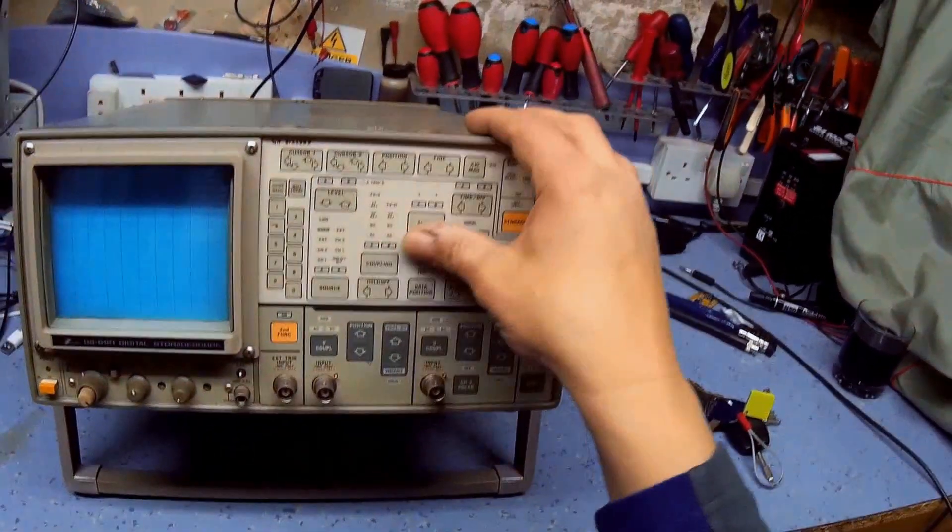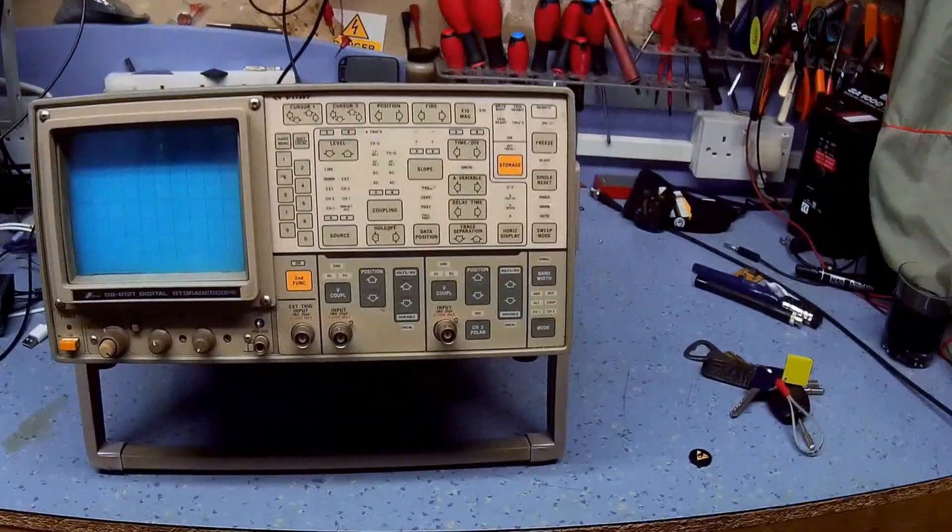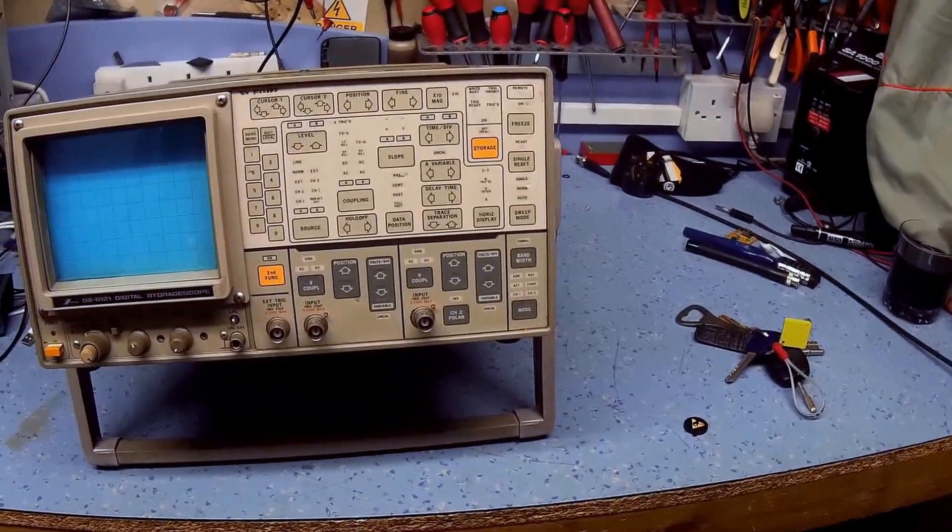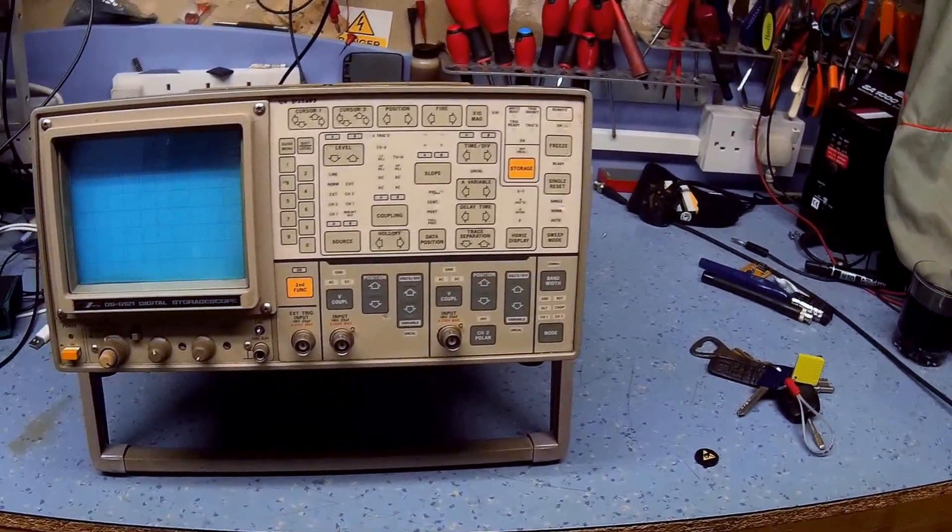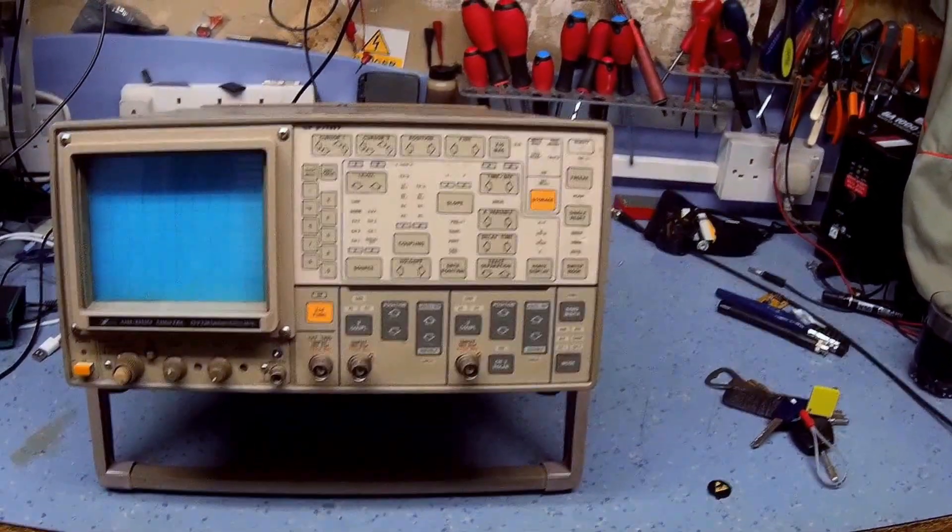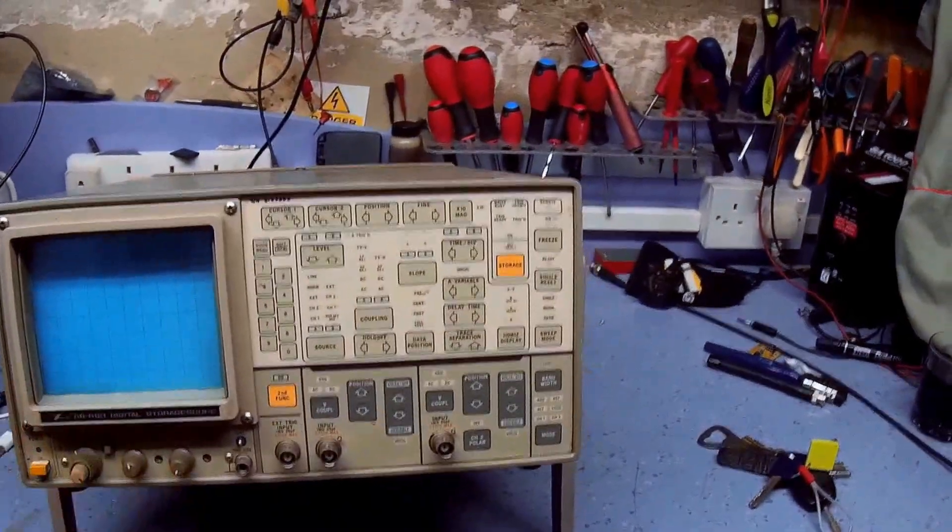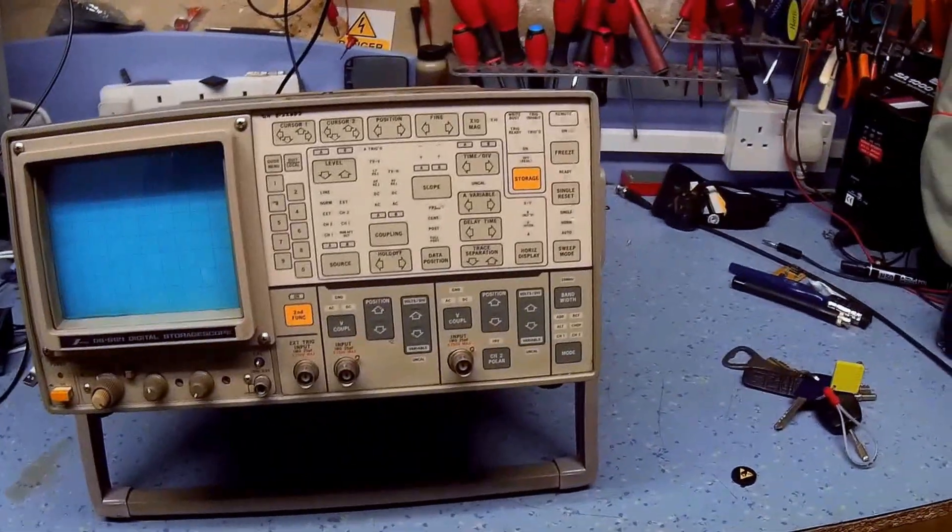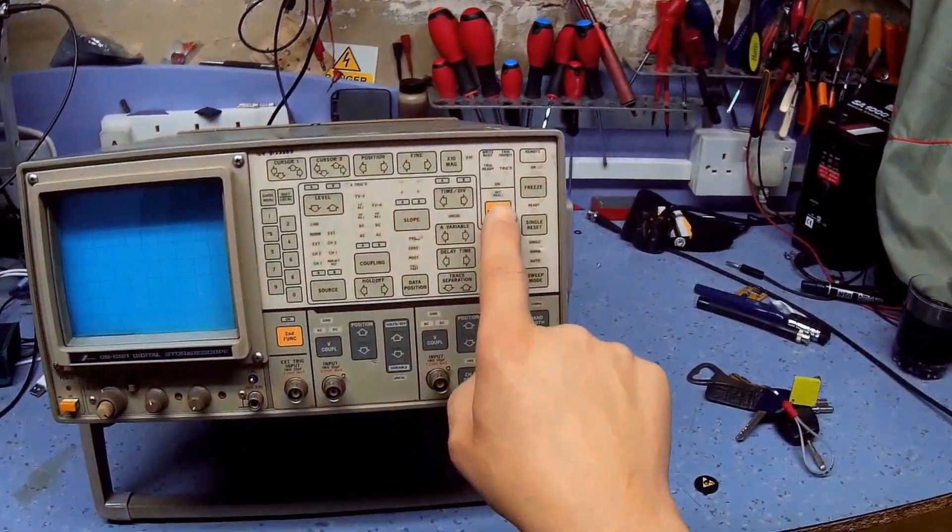We bought about four or five of them, and they've all been very reliable, apart from one that failed with a problem with its storage feature. But even though it says it's a digital storage scope, it's actually a full analogue scope as well. It's a storage section that can be actually selected. So normally, in normal operation, it's an analogue scope.